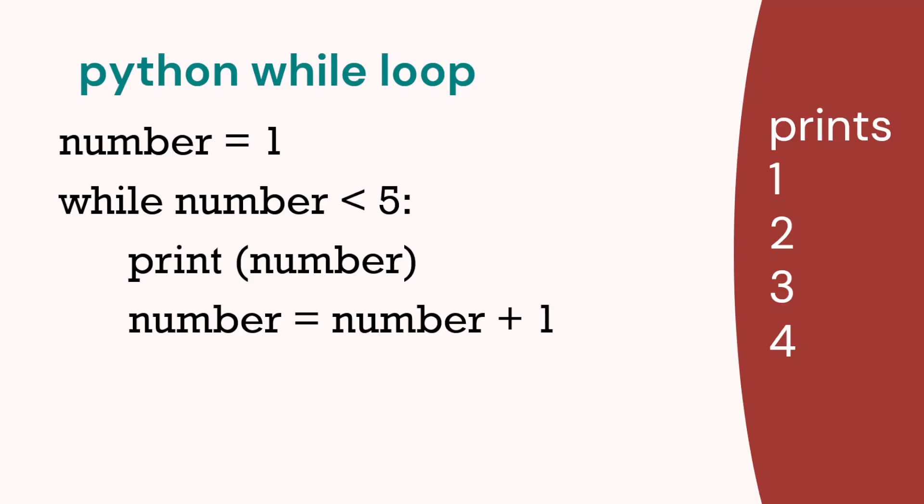Now let's look at while loops. Here's the Python while loop. We start off with a number. We've got a while loop with a condition, the same we had in if statements. We've got number is less than 5. Print number, and then we increase the number by 1. That prints numbers 1 to 4.